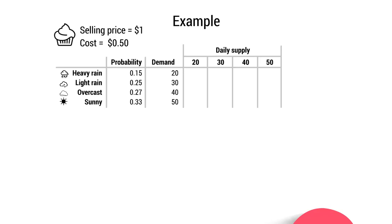If it rains very heavily there is only demand for 20 — which is fortunate because Susan has only produced 20. The selling price per cupcake is $1 and the cost to produce is $0.50. So she will make $20 in revenue and it will cost her $10 to make the 20 cakes, giving her a profit of $10. And actually she's going to have a profit of $10 regardless of whether it's heavy rain, light rain, overcast, or sunny, because once she has sold her 20 cupcakes there are no more to sell.